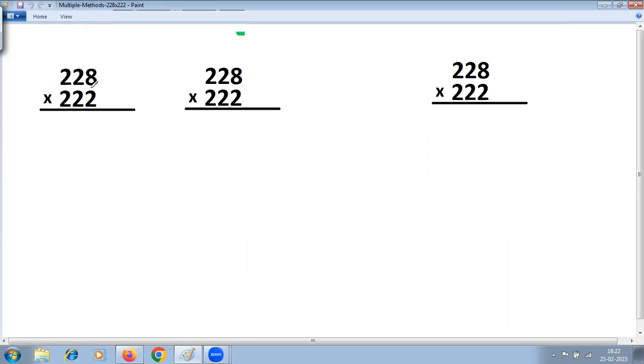If you see this problem, it's very clear that we can use multiplication special case. 22 here is common, and 8 plus 2 is 10. So take common digit, that is 22 in this case, multiply with the next number, or one more, that is 23. On right hand side, multiply digits at ones place.